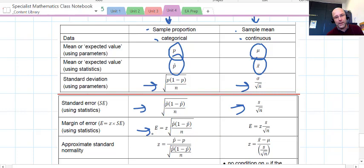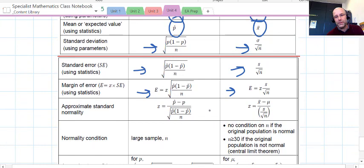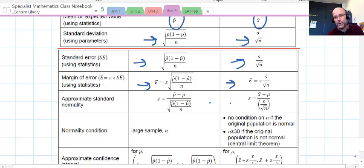So we have different sorts of quantities going on. Standard deviation in math methods versus specialist maths. The standard error for each of them. The margin of error above and below X bar or p hat. They both live up to the standard normality, and we've seen that in both lots. You should see my math methods playlist too for the math methods ones.